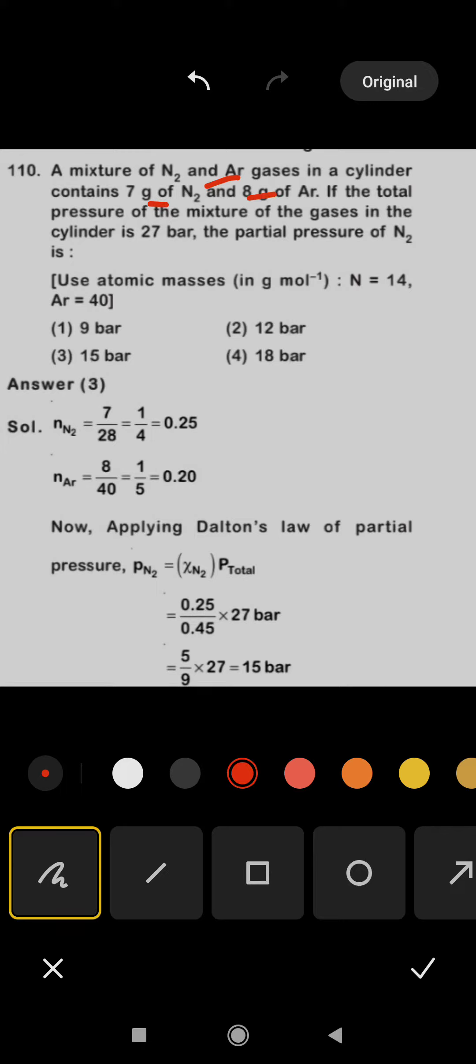We have 7 grams of nitrogen and 8 grams of argon. If the total pressure of the mixture of gases in the cylinder is 27 bar, the partial pressure of N2 is what we need to find. Given atomic masses: nitrogen = 14 and argon = 40.